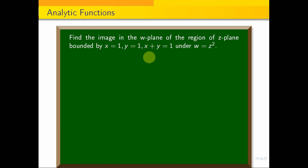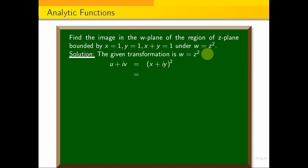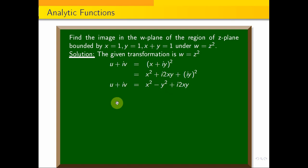Let's see how the transformation works. We write w equal to u plus iv equal to z square, where z equal to x plus iy. Expanding: u plus iv equals x square minus y square plus i times 2xy, since i square equals minus 1. Equating real and imaginary parts, we get u equal to x square minus y square and v equal to 2xy.